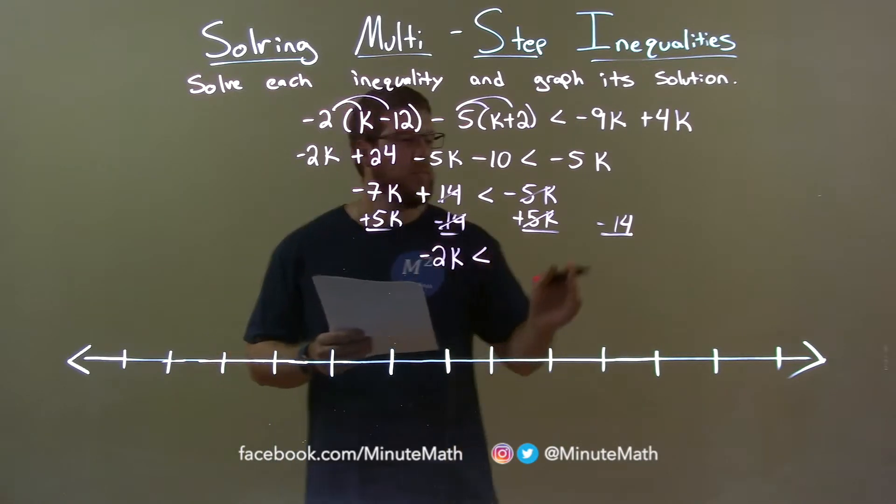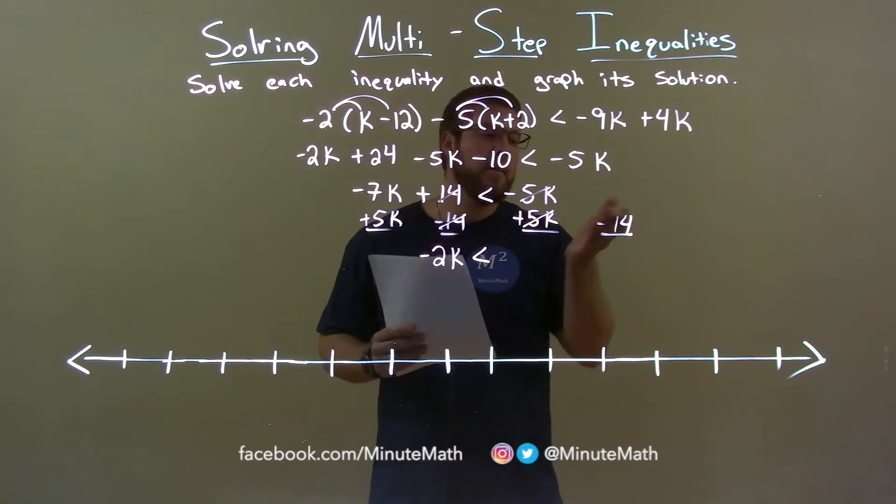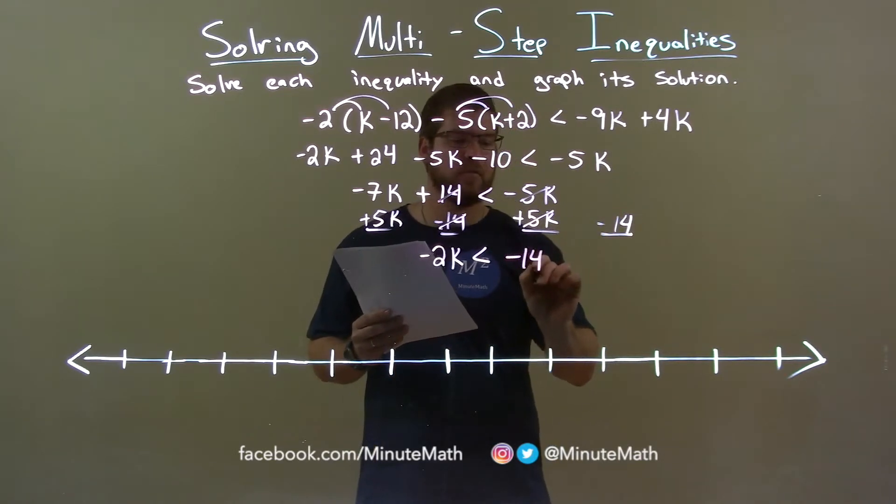So, less than. By the right-hand side, there is no regular number, so there's essentially nothing there. 0 minus 14 is negative 14.